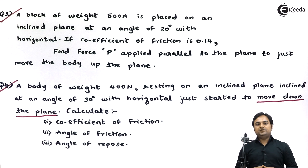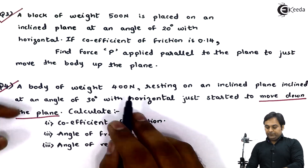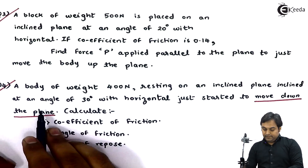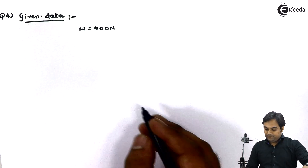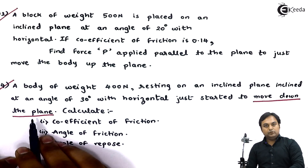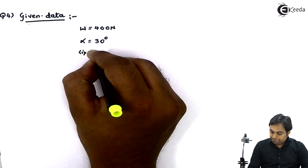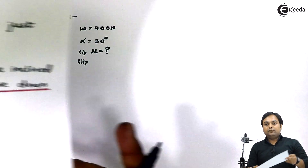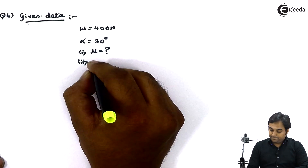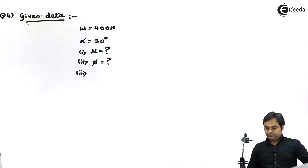Based on whatever is given in this problem, let us write the data first. A body of weight 400 Newton is resting on an inclined plane inclined at an angle of 30 degrees with horizontal — alpha is equal to 30 degrees. It just started to move down the plane. Find: mu (coefficient of friction), phi (angle of friction), and alpha (angle of repose).